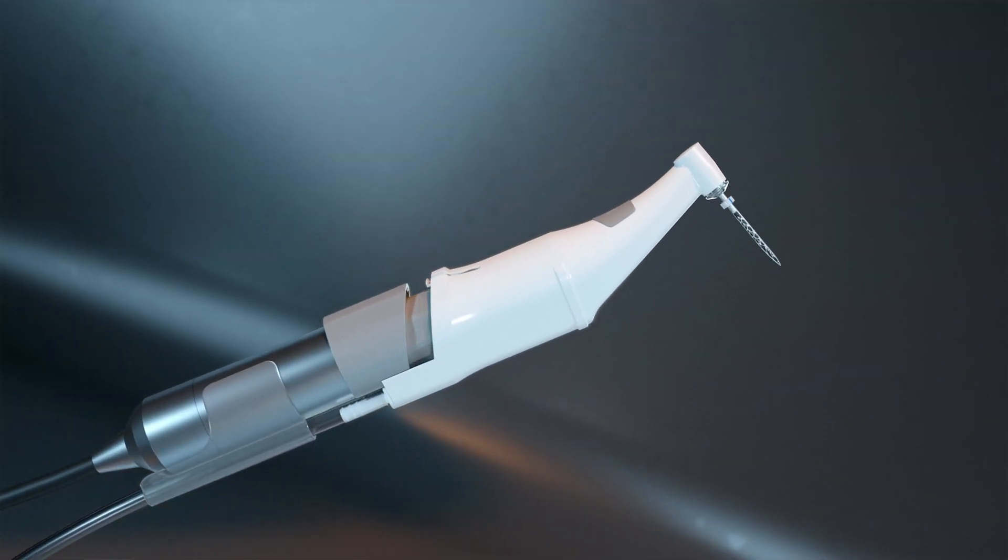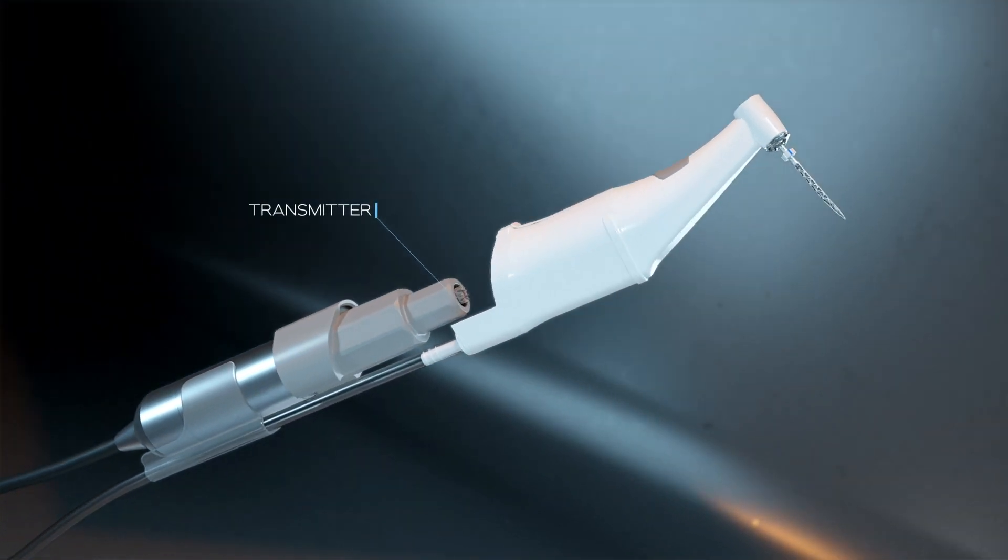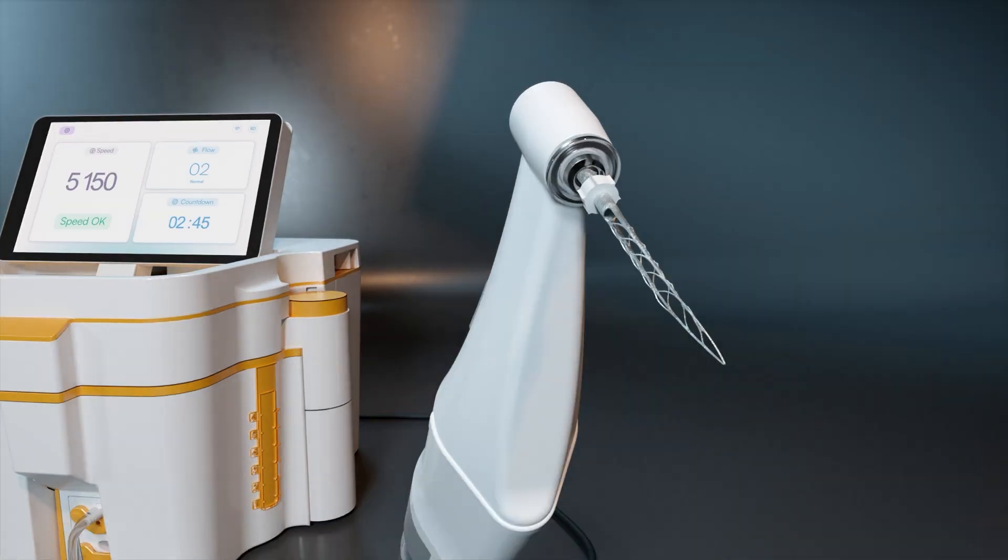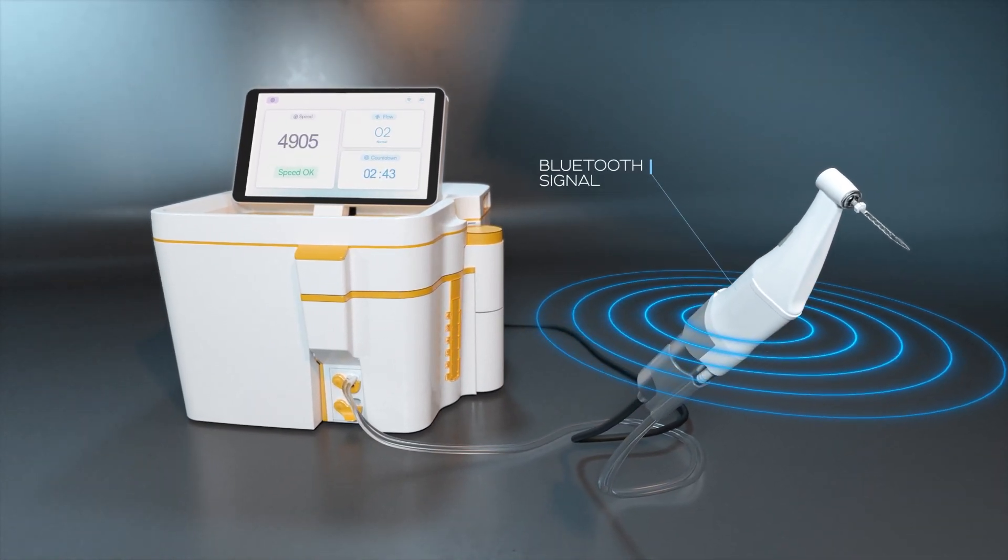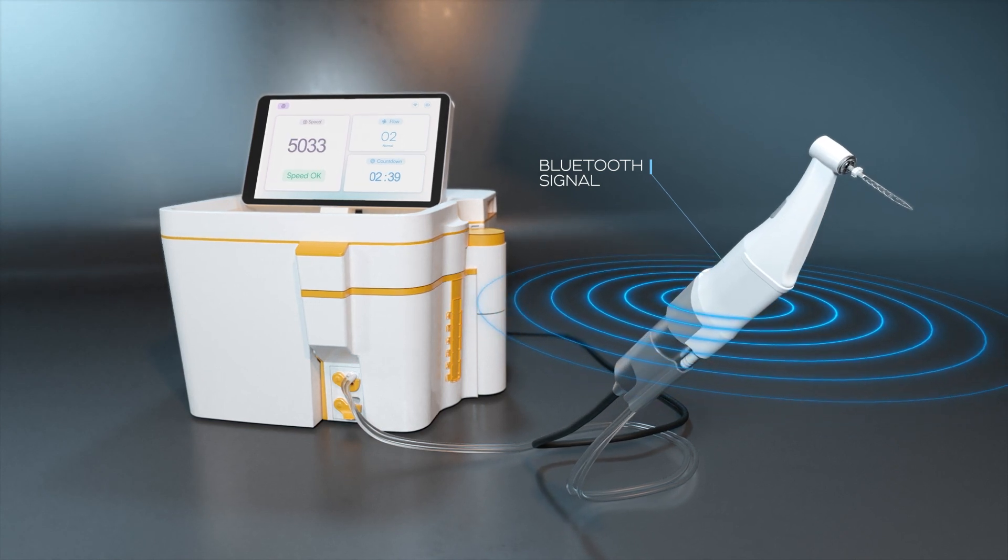The handpiece is fitted onto a reusable transmitter that generates its own power from the micromotor center, sending a Bluetooth signal to the main device indicating the operation of the motor and monitoring the rotation speed.